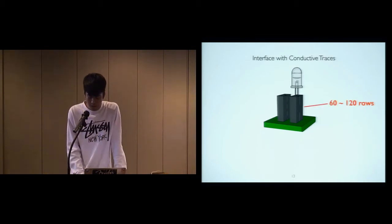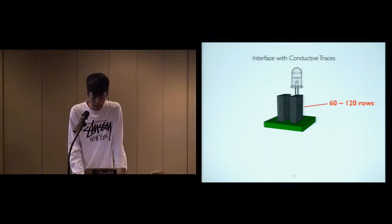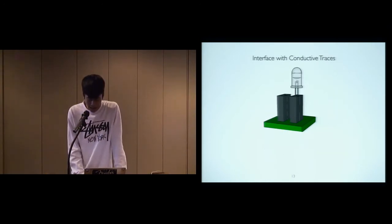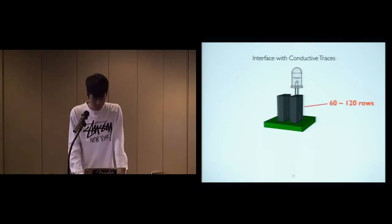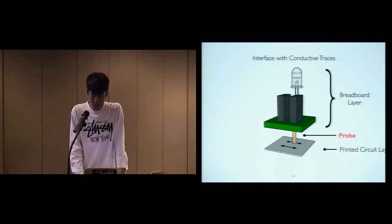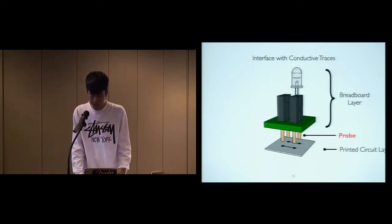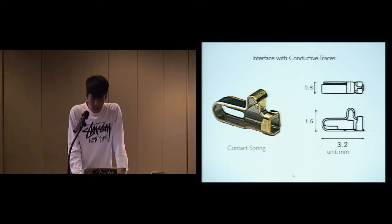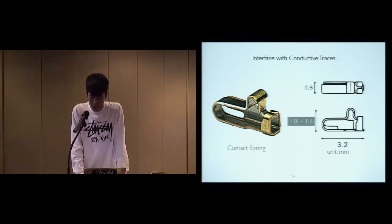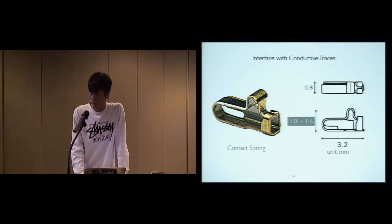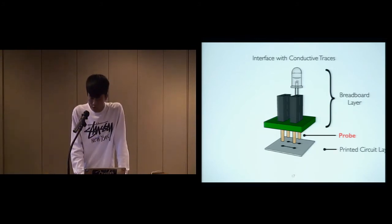The first challenge we encounter is to interface the breadboard layers and printed circuit paper. Typically, there are about 60 to 120 rows of female headers on the breadboard. How can we make sure all of them are fully connected with circuit paper? At first, we tried probes to interface the breadboard layer with the traces. However, there's a problem that it's almost impossible to guarantee the equal height of all the probes because of the production and soldering errors. So we turn to a contact spring, which is a compressible probe whose height has a range from 1.0 to 1.6 millimeter. The compressibility gives the tolerance of dimension errors. Then we replace the probes with contact springs to ensure the contact between two layers.